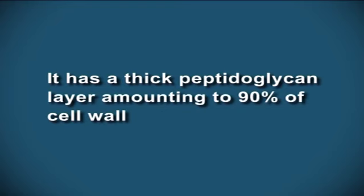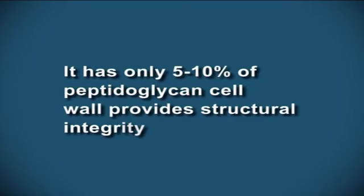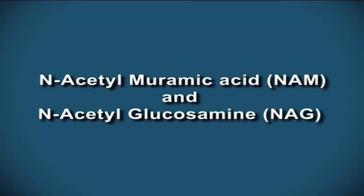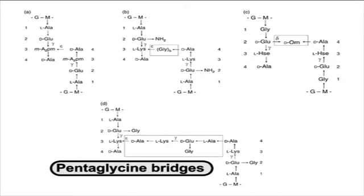In gram-positive bacteria, the outer membrane is absent. However, it has a thick peptidoglycan layer amounting to 90% of the cell wall. In gram-negative bacteria, the outer layer contains unique lipopolysaccharides and lipoproteins, with only 5 to 10% peptidoglycan. Cell wall provides structural integrity and serves as a receptor. Cell wall is present in all prokaryotes except Halobacterium and Halococcus species. Amino sugars like N-acetyl muramic acid and N-acetyl glucosamine are present in the cell wall. Pentaglycine bridges link adjacent amino sugars through tetrapeptide side chains.